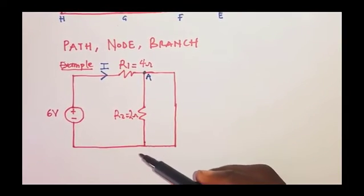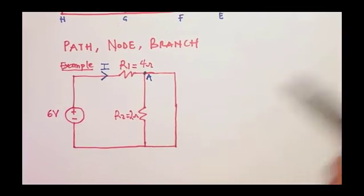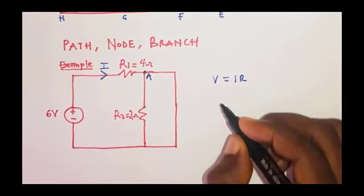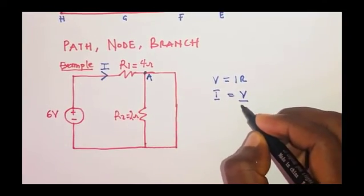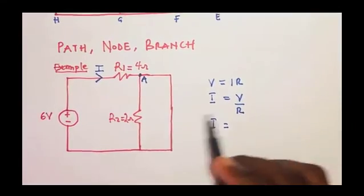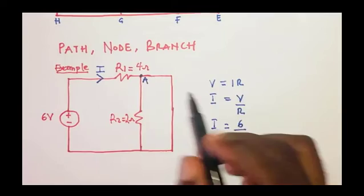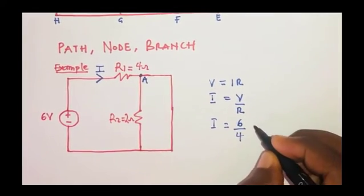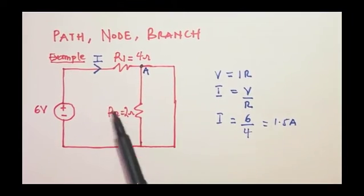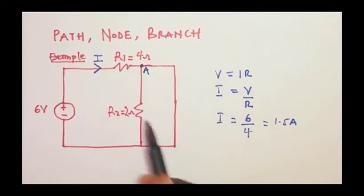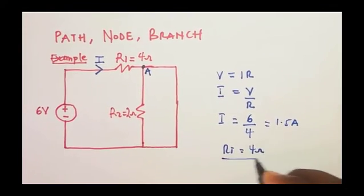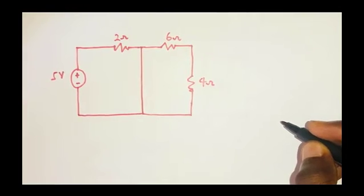To find the current I flowing through the circuit, from Ohm's law V = IR, we have I = V/R. With V = 6 volts and R = 4 ohms, I = 6/4 = 1.5 amperes. Since current flows only through R1, the total resistance for the circuit is 4 ohms.